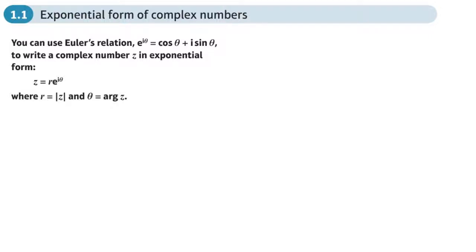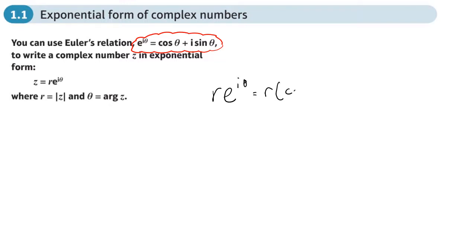This is the first section on chapter 1, complex numbers, in the Core Year 2 book. We're going to be looking at how we can write complex numbers in an exponential form using e. Up here is Euler's relation. If we just times both sides by r, we get r·e^(iθ) equals r·cosθ plus i·sinθ.